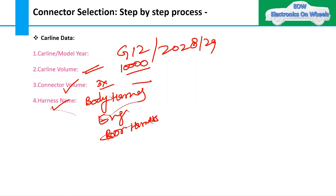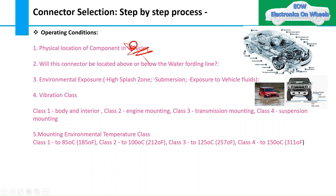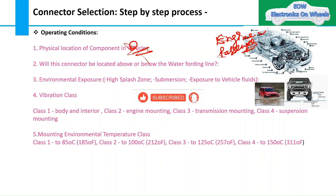Before selecting a connector, you should have all this information ready so you are not stuck when talking to a supplier. Moving to the factors: the first is operating conditions. The physical location of the component in the vehicle is key — whether the connector is in the engine compartment, body, or passenger compartment determines whether it is in a dry zone or wet zone.